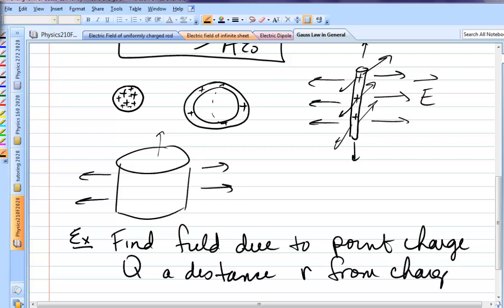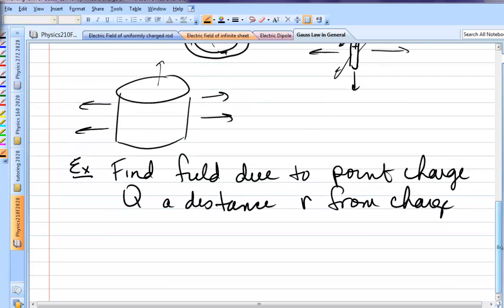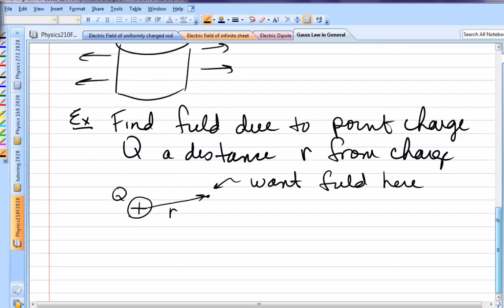You have to be told where it is you want the field, because obviously it's different everywhere. Step one is to draw a picture. You draw a picture of the Q. That's obviously spherically symmetric. You draw a point out here, a distance R away. And then you say, want field here. It's very important you identify where you want the field, because that's going to be crucial in your calculations.